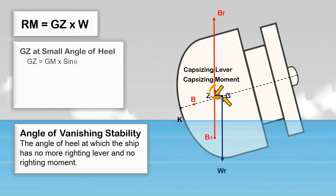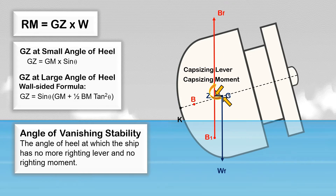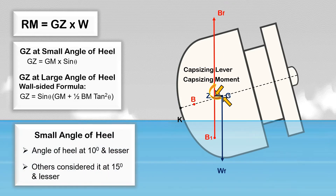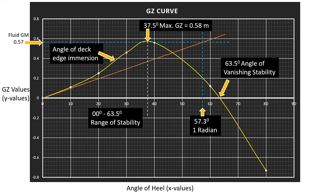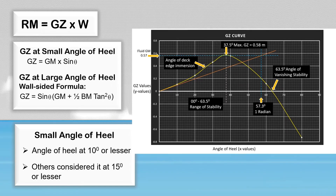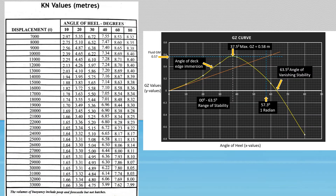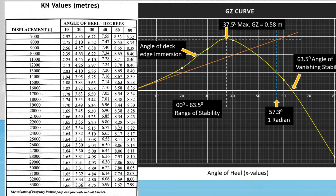This is the formula to determine the GZ value at a small angle of heel, and for the large angle of heel, a wall-sided formula is used. Small angle of heel is when the ship is heeled at 10 degrees or less — others consider it at 15 degrees or less — beyond this it is considered a large angle of heel. The righting lever for a specified angle of heel is represented on the curve of statical stability, known as the GZ curve, which can be found in the ship's stability manual. I will show you how to determine the GZ values at any angle of heel using the KN values tabulated from the ship's stability manual, then we will construct the GZ curve to find the range of stability.